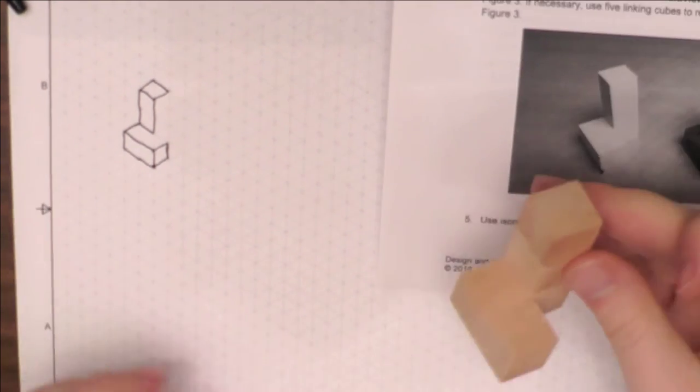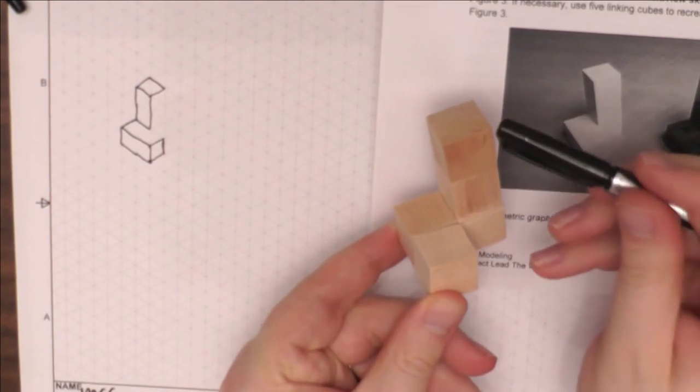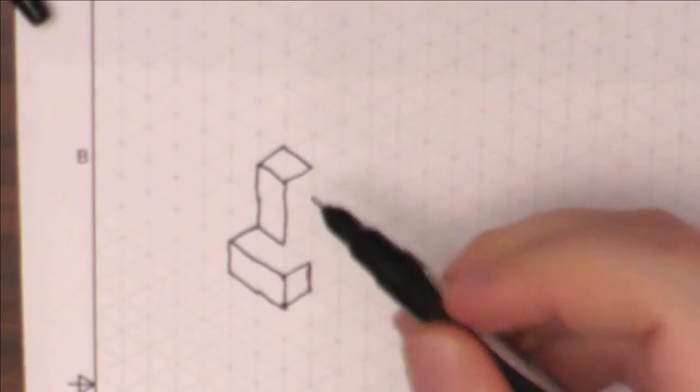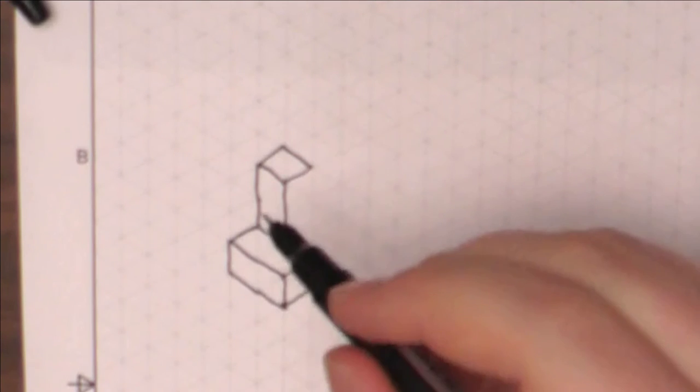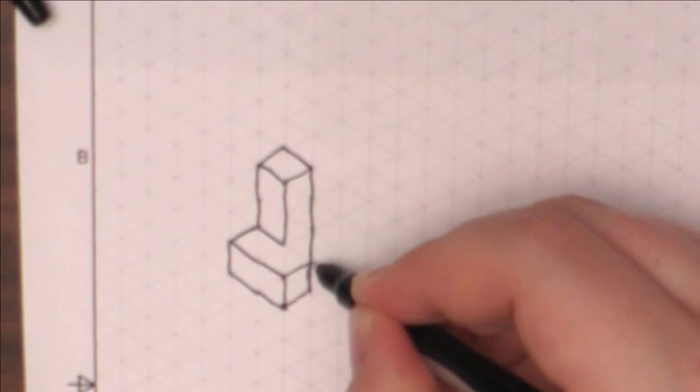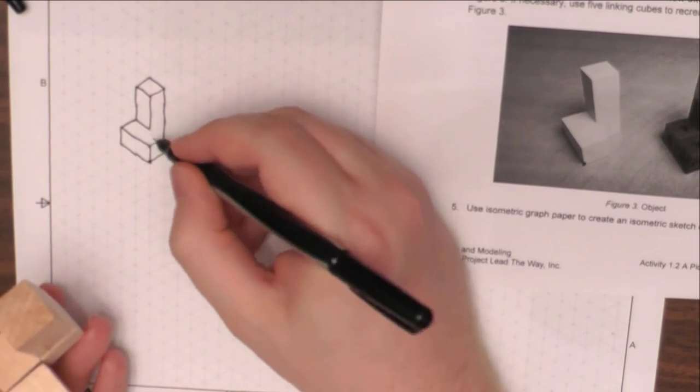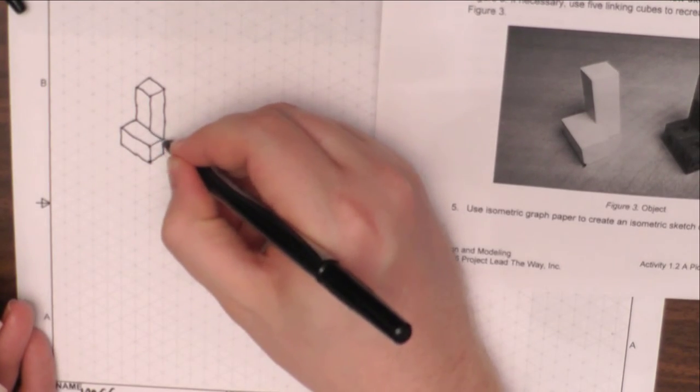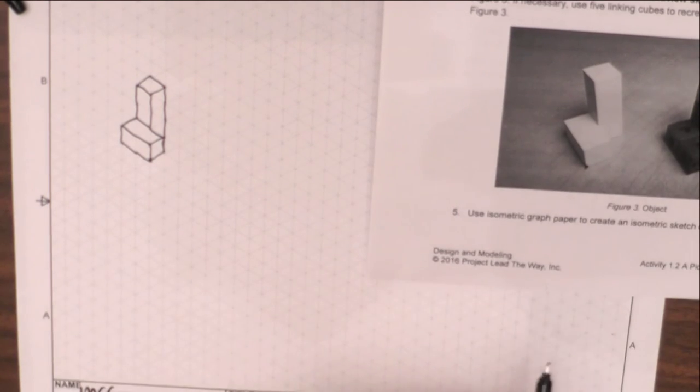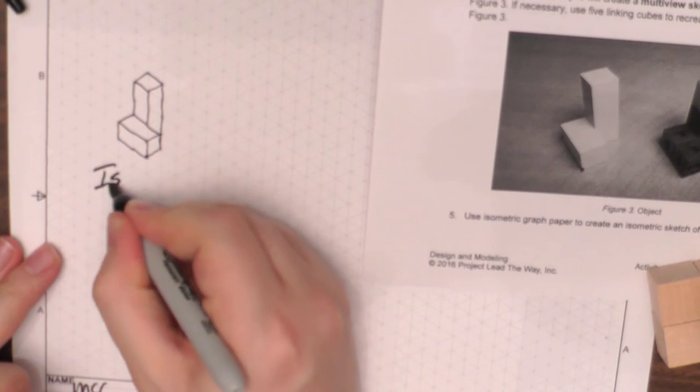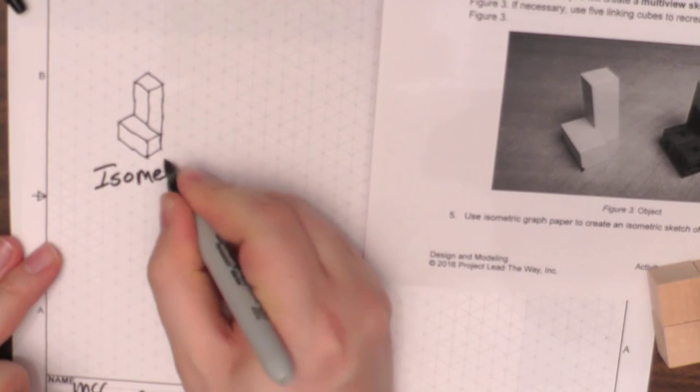Looking here, it's one, two, three. So I come over to this corner because that's the same corner right there. And I go down one, two, three. We need to add this line right here back in. And that is my isometric. Again, this is the isometric.